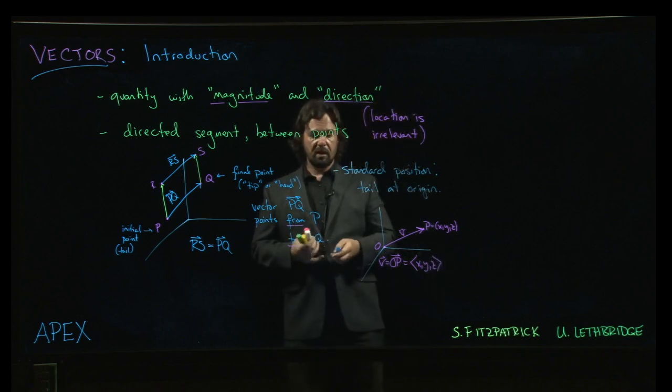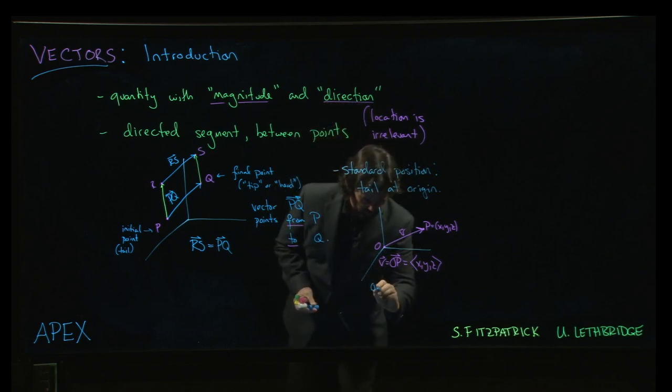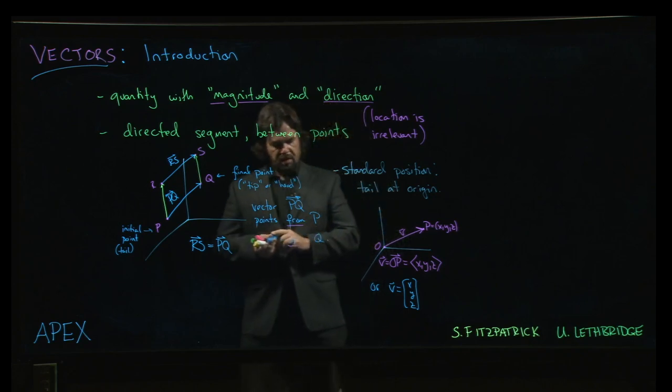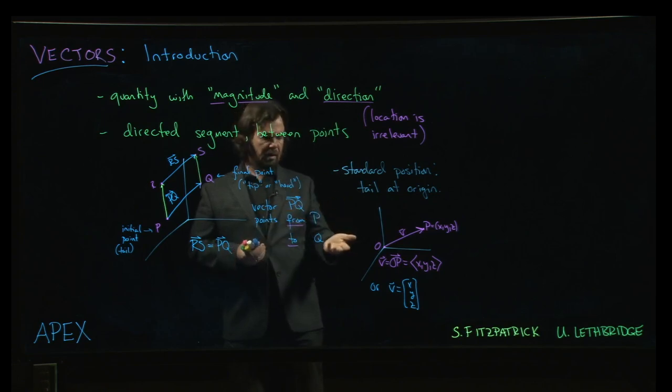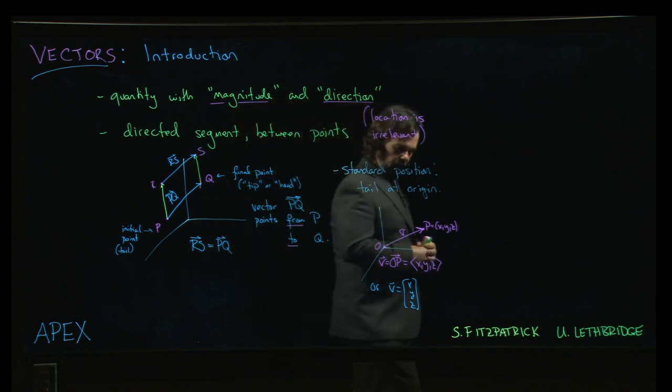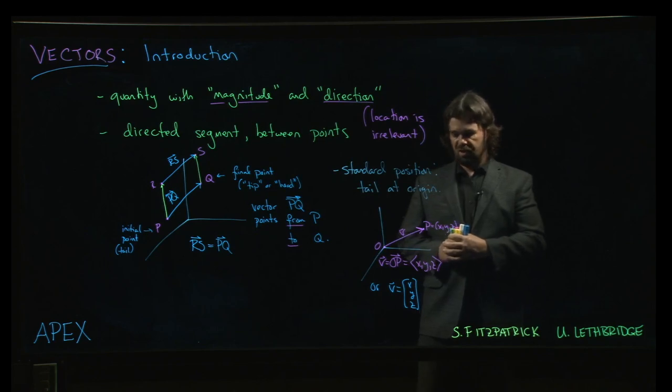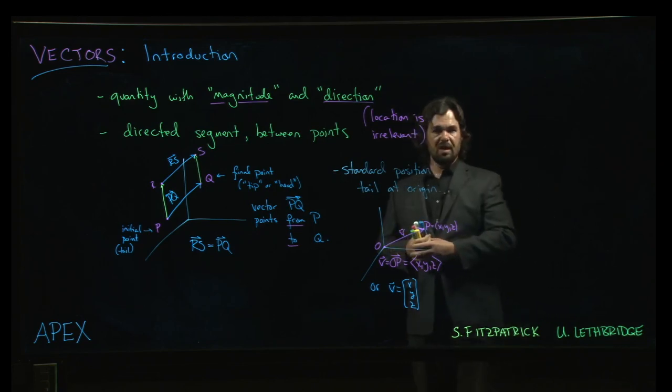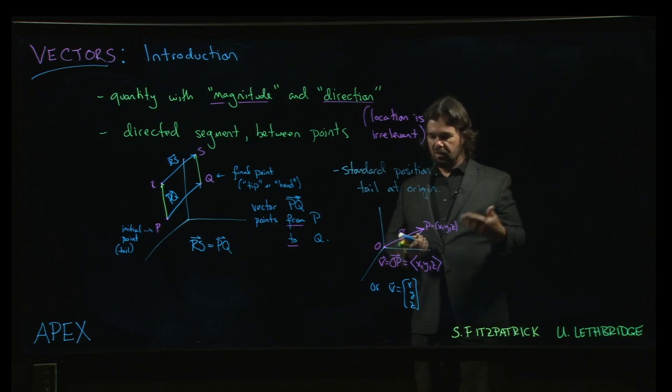In other contexts, in particular in linear algebra, you might also see this written as either a row or a column vector. That notation tends to work better if you're talking about matrix transformations, which is one of the things you would deal with in linear algebra. That's a more convenient notation to use. There's also ways you can do it using row vectors if you prefer. But we'll stick with the angle bracket notation. It's the one that's used in the textbook. We'll try to align with the textbook as well as we can.